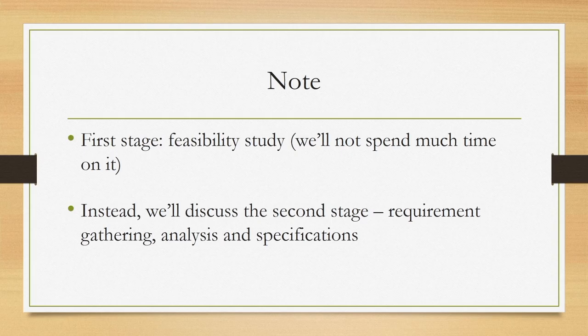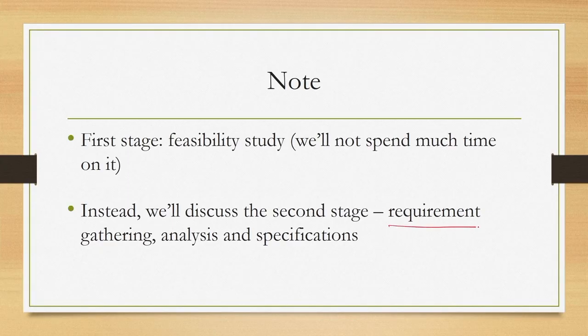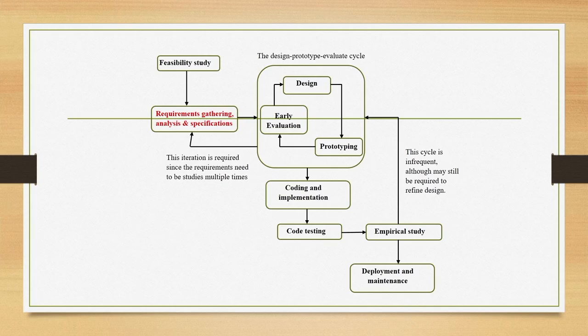In our discussion on these stages, we will skip the first stage — feasibility study — and assume that feasibility has already been established. So we will start our discussion with the second stage: requirements. Note that the term 'requirement' here refers to usability requirements rather than system-level requirements — we shall see the difference in subsequent discussion.